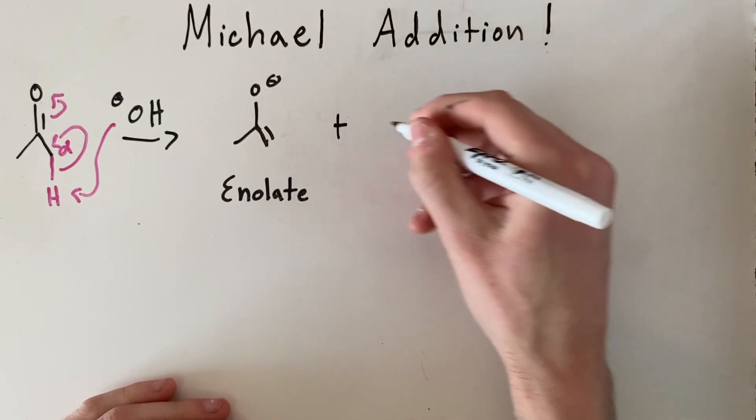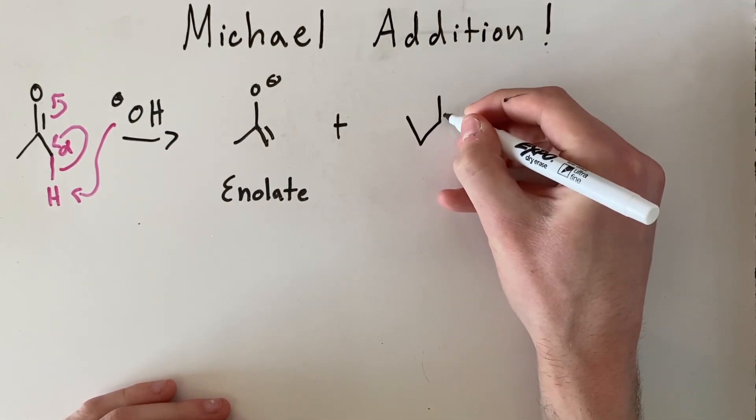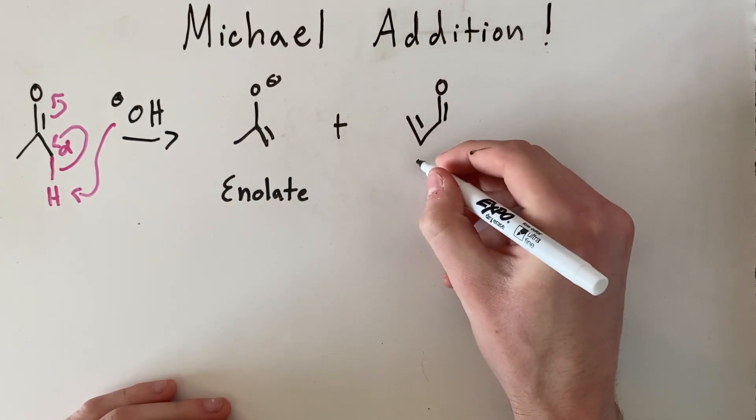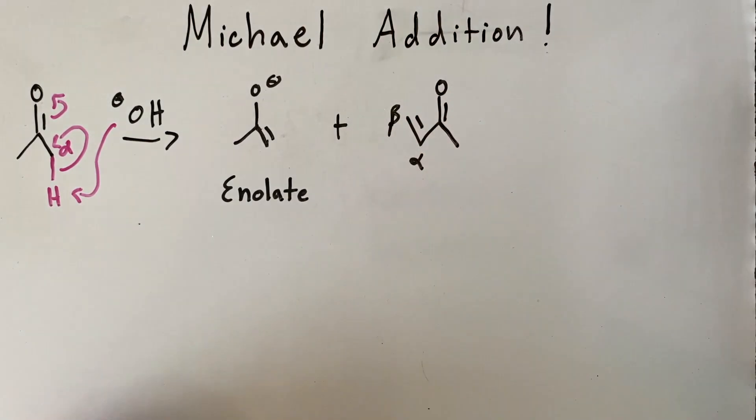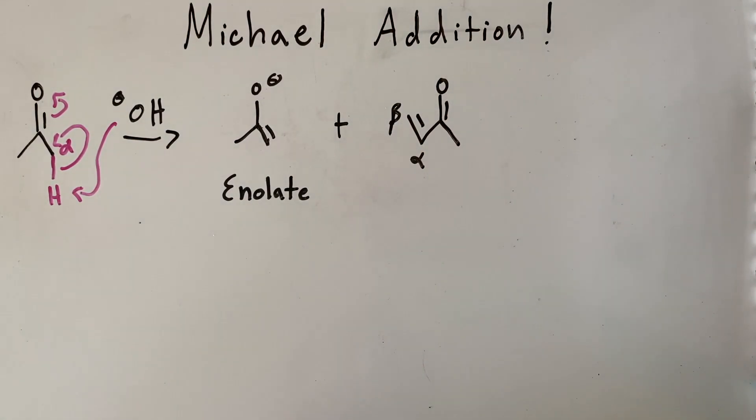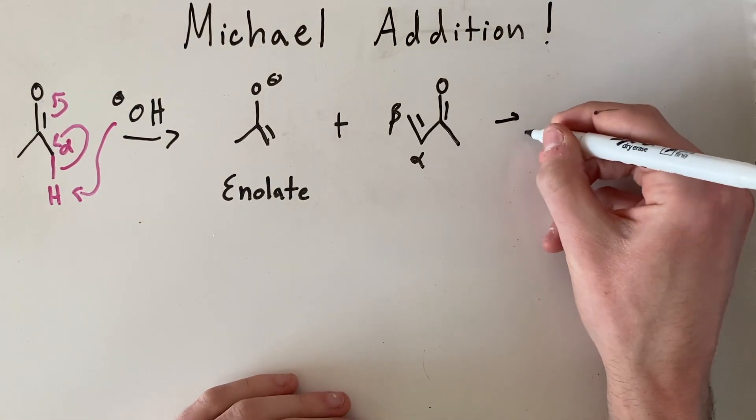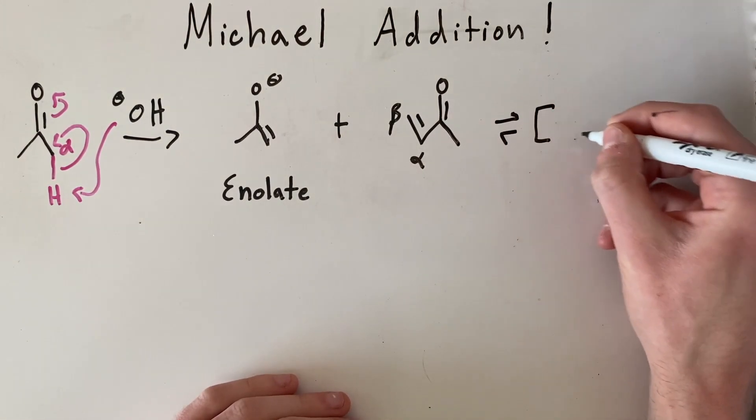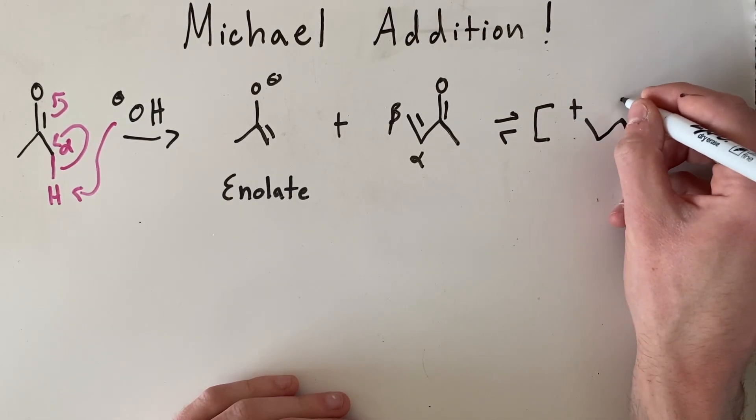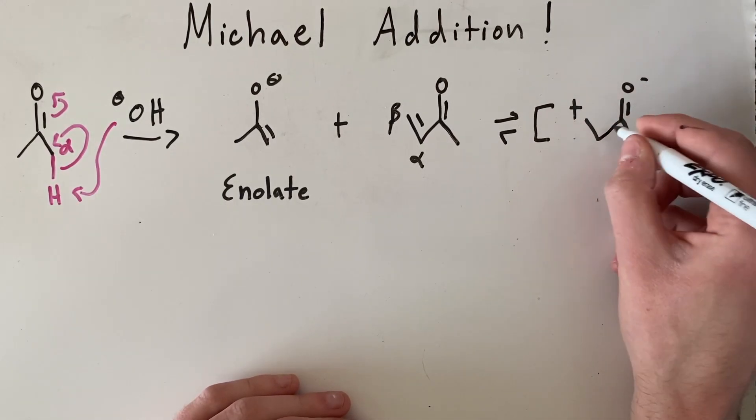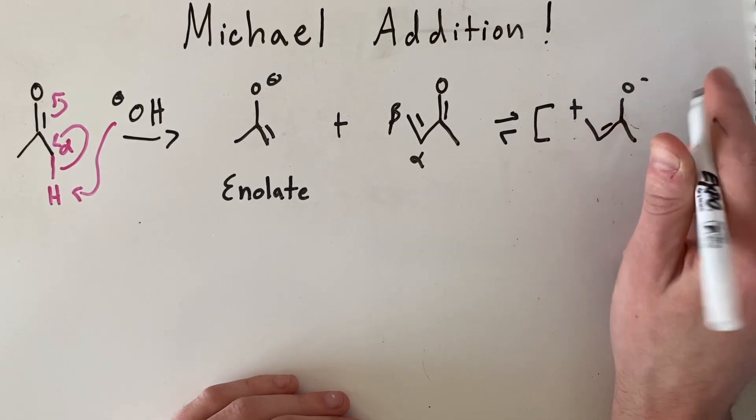Next, what he did was took another molecule with an alpha-beta degree of unsaturation. What's interesting about the alpha-beta unsaturated ketone is that we have a resonance structure which contains a positive charge at the beta carbon as well as a negative charge at the oxygen.